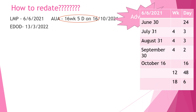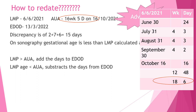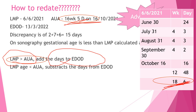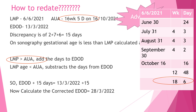The discrepancy is 15 days. The key rule: if the LMP age is more than the sonography age, you add the days to the EDOD; if LMP age is less, you subtract. Here, the LMP age (18 weeks 6 days) is more than the sonography age (16 weeks 5 days), so we add 15 days to the EDOD. The corrected EDOD becomes 28th March 2022.